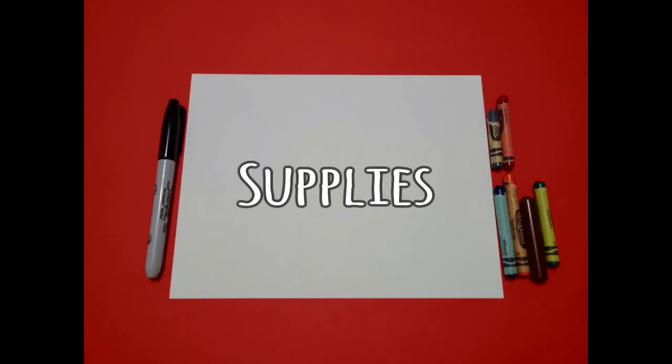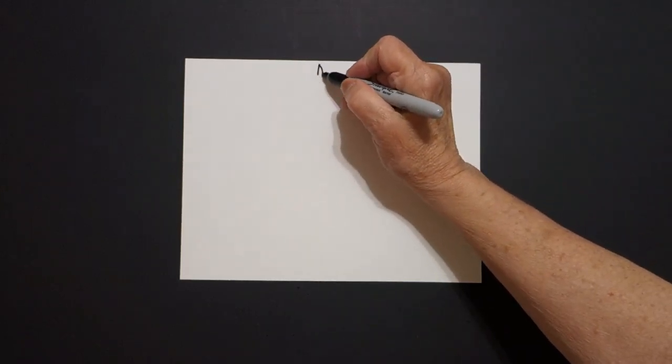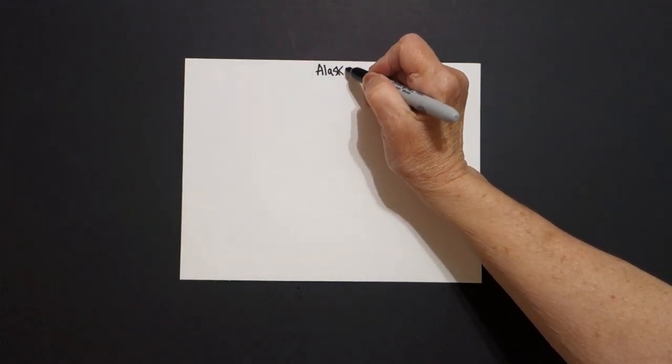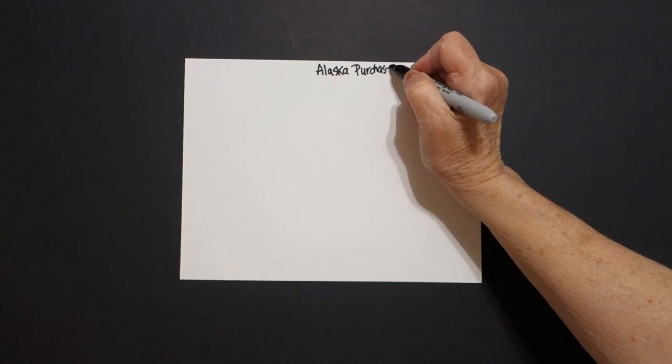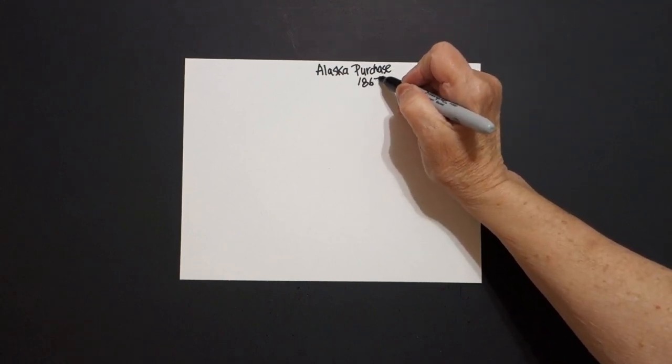Hi, I'm Patty Fernandez and I'm an art teacher. Visit my website at pattyfernandezartist.com. Okay, let's draw. Today's project is the Alaska Purchase of 1867. This is when we bought Alaska from the Russians.